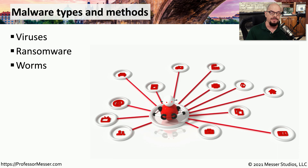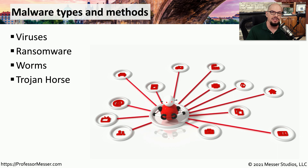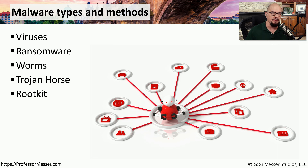A worm is malware that's very similar to a virus, but a worm can move around from system to system without any type of user intervention. A Trojan horse is malware that convinces the user that it's OK to install because it pretends to be software that's not malicious. A rootkit is a relatively uncommon type of malware, but once it installs onto your system, it's very difficult to identify and remove.